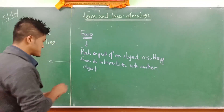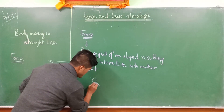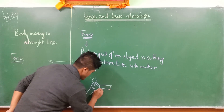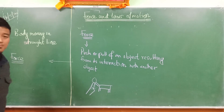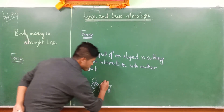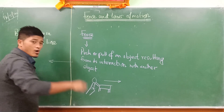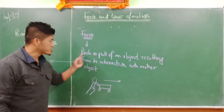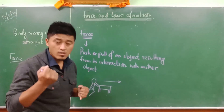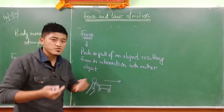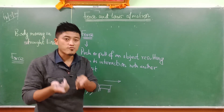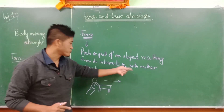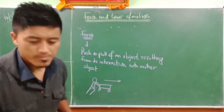For example, there is a person applying some force on a table, pushing it in a certain direction. In order to push that table, what is needed is an interaction between the table and the person. In that way, push can happen. In order to push a table, there must be interaction between me and the table - same for pull. So force is a push or pull of an object resulting from its interaction with another object. That is really very important.